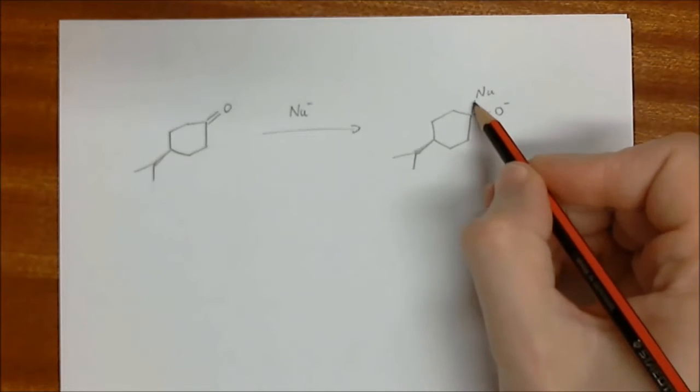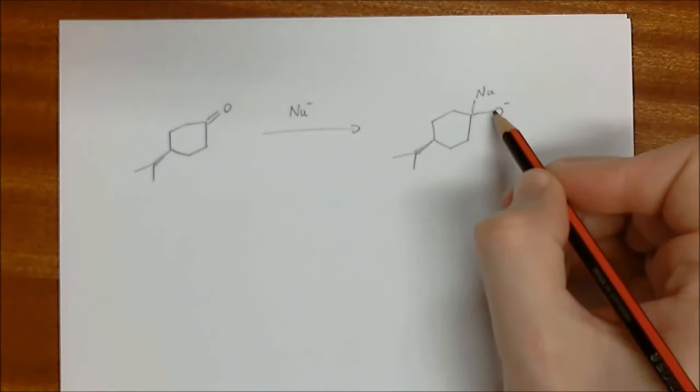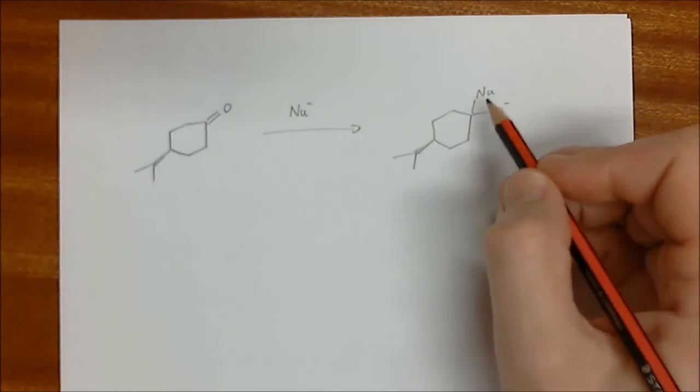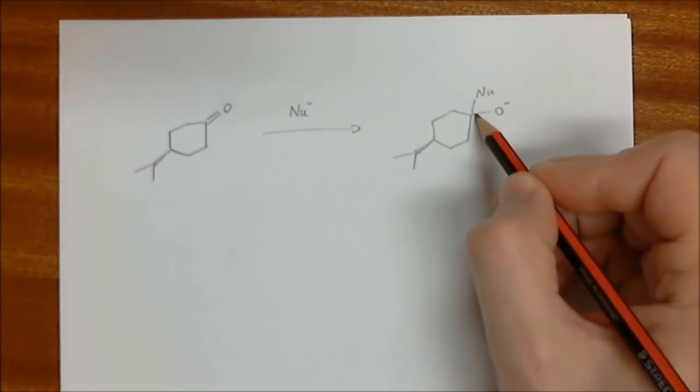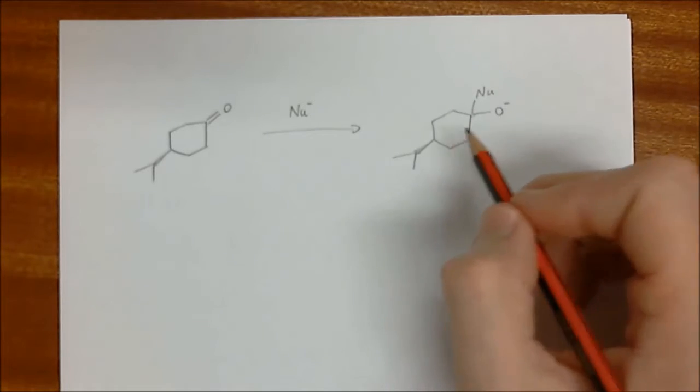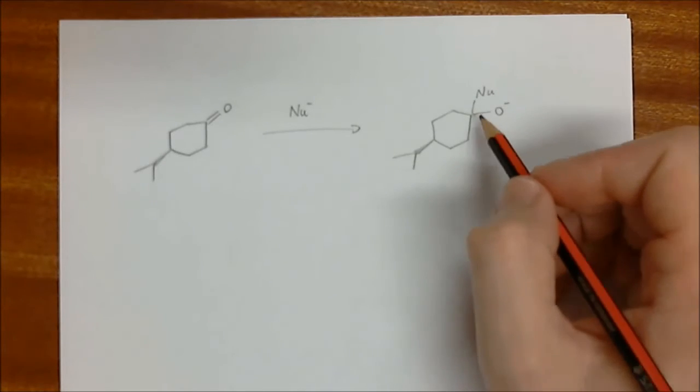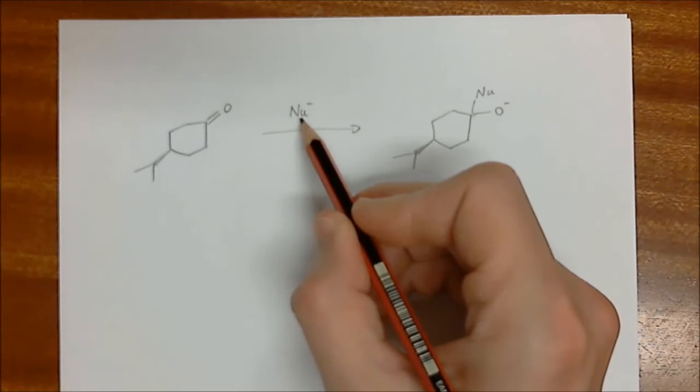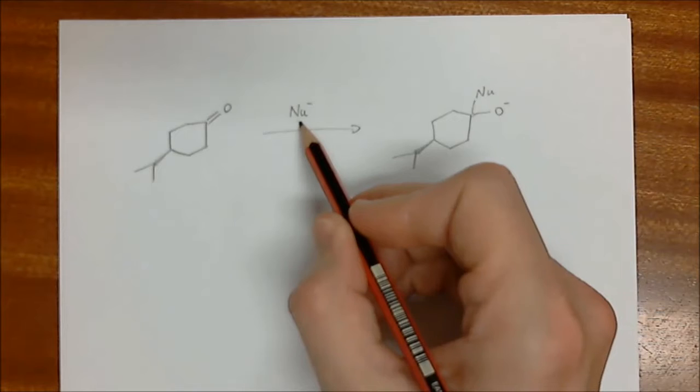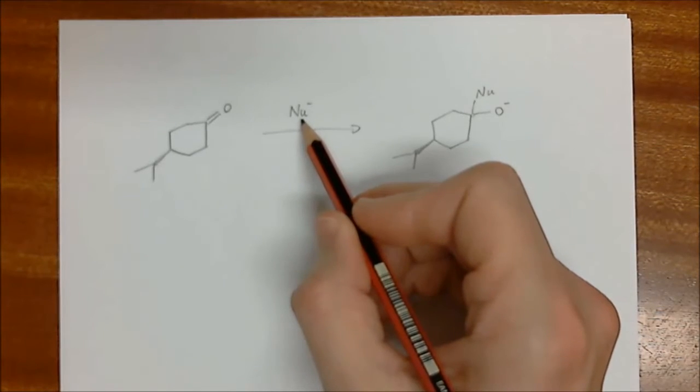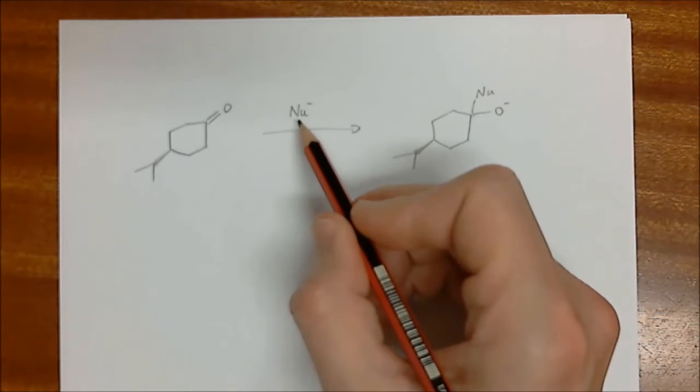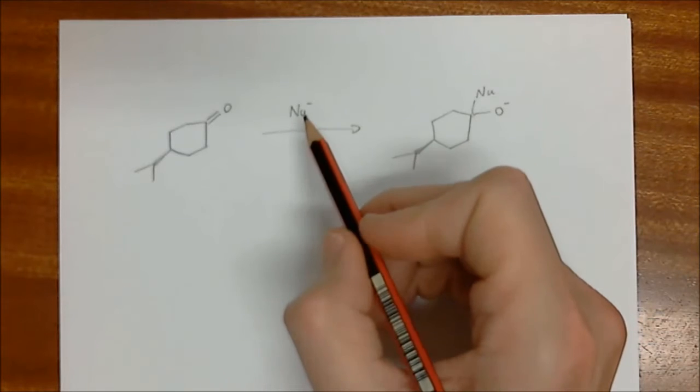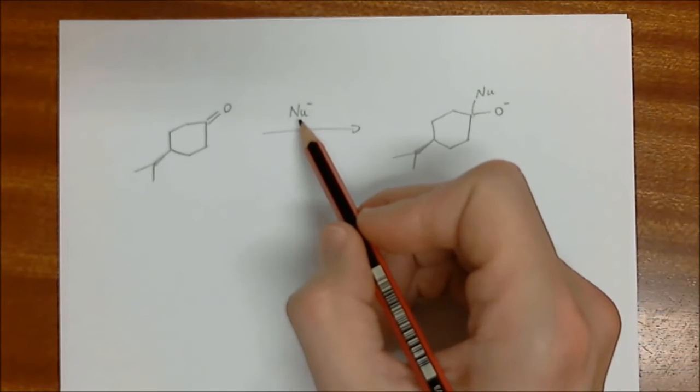And the nucleophile could either be facing up or it could be facing down. And the question is actually going to be about which way is it. And there's a very simple answer to this. The very simple answer is that when the nucleophile is a big molecule, then it will want to be in the equatorial position. If the nucleophile is small, it will want to be in the axial position.